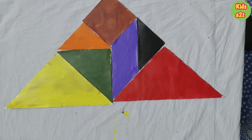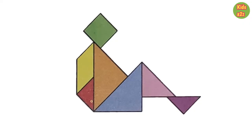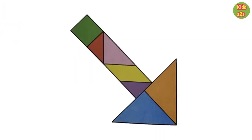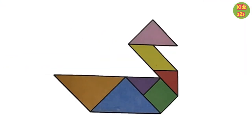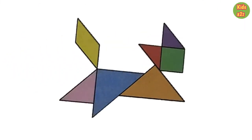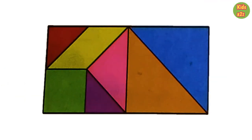Similarly we can make a triangle and many other shapes, like a man sitting, an arrow, a running man, a duck, a cat, a rectangle, and many other shapes.